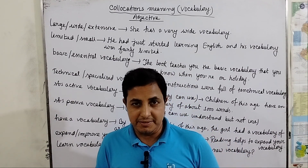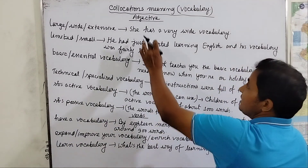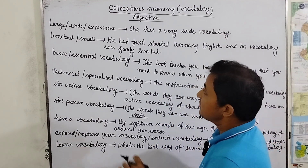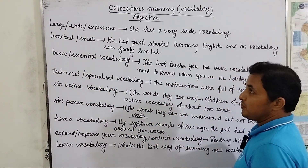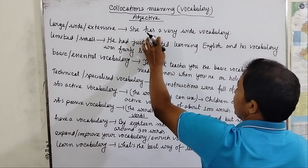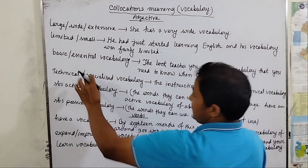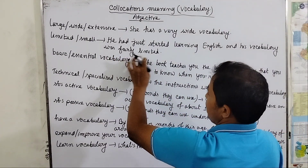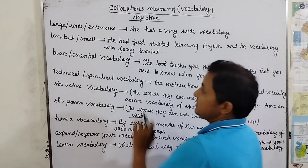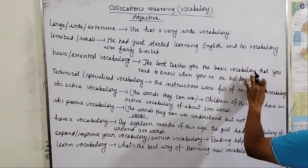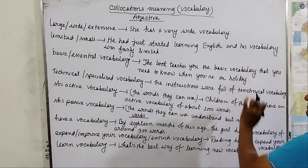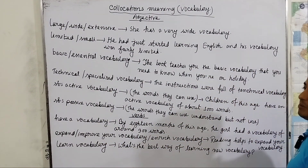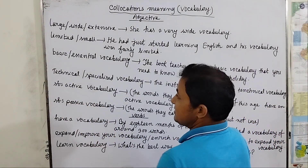Now I'm going to explain vocabulary words used as adjectives. You can use: large vocabulary, wide vocabulary, or extensive vocabulary. For example: she has a very wide vocabulary. Next: limited or small — he had just started learning English and his vocabulary was fairly limited. Then: basic or essential vocabulary — the book teaches you the basic vocabulary that you need to know when you are on holiday. Also: technical or specialized vocabulary — the instructions were full of technical vocabulary.